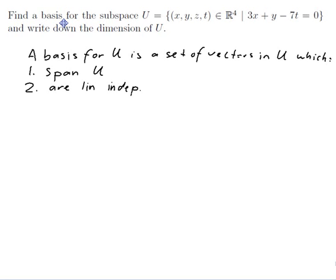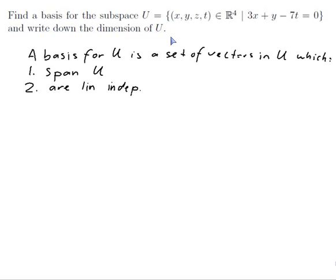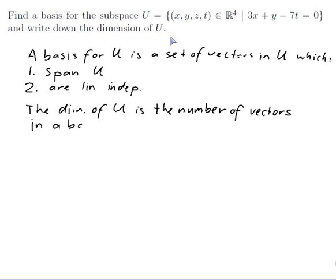So that's what a basis of U is. And I need the dimension of U — the definition of that would be the number of vectors in a basis. So once I've got a basis I can just count how many vectors there are and write down the answer for the dimension. So I really need to find a basis.